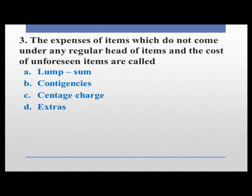The expenses of items which do not come under any regular head of items, and the cost of unforeseen items, are called: option A lump sum, option B contingencies, option C sundry charges, option D extras. The answer is contingencies. Option B is correct.